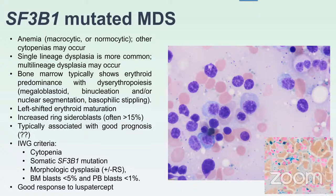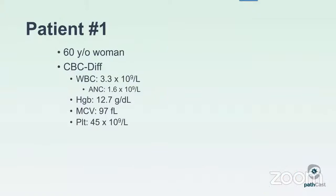Going back to the international working group criteria, the IWG proposed criteria to make this an entity. The patient has to be cytopenic, you detect a somatic SF3B1 mutation, morphologic dysplasia plus or minus ring sideroblasts, and low blasts in the peripheral blood and bone marrow. These patients very well respond to Luspatercept, which is important clinically.